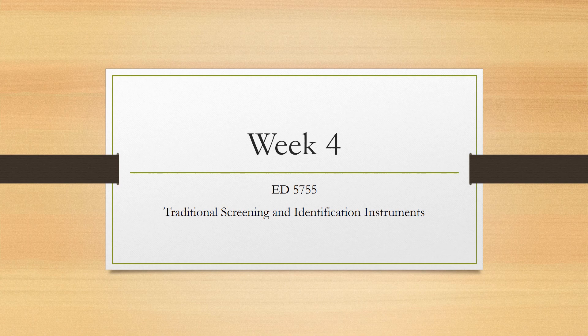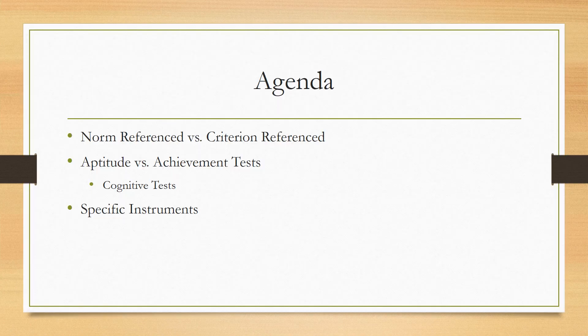This week we're going to switch gears and talk about some types of instruments or tests. When I say instruments, you should think tests or assessments that are used in the identification of gifted students. We're going to talk about norm-referenced versus criterion-referenced tests, the difference between aptitude tests and achievement tests, cognitive tests, and then we're going to get into specific instruments.